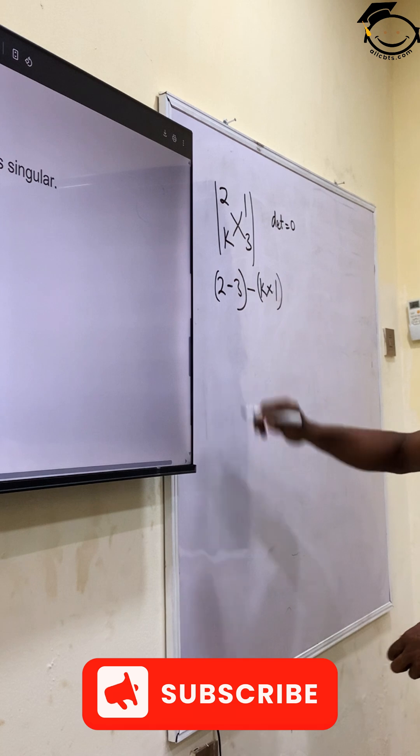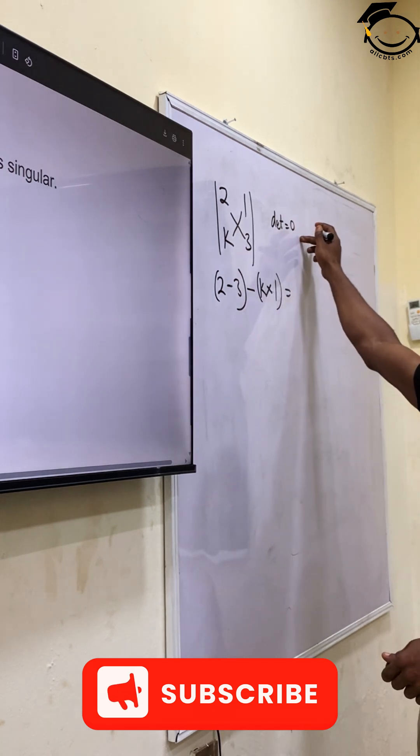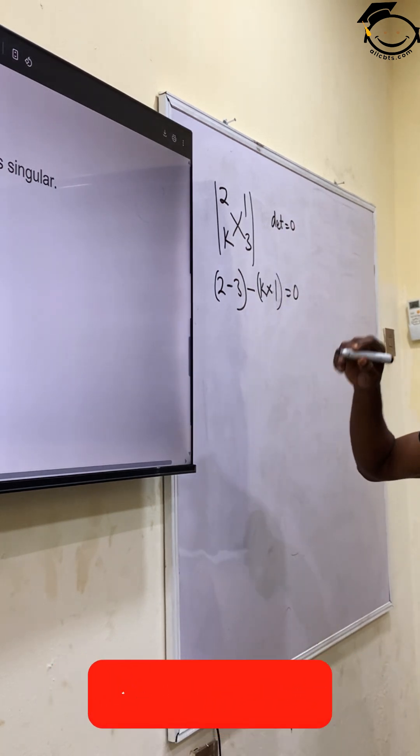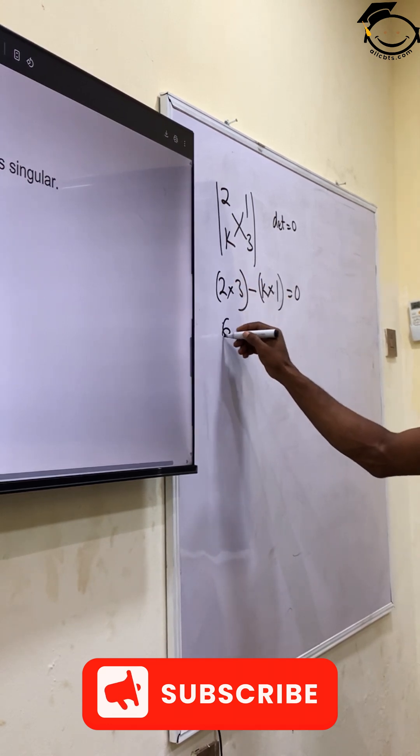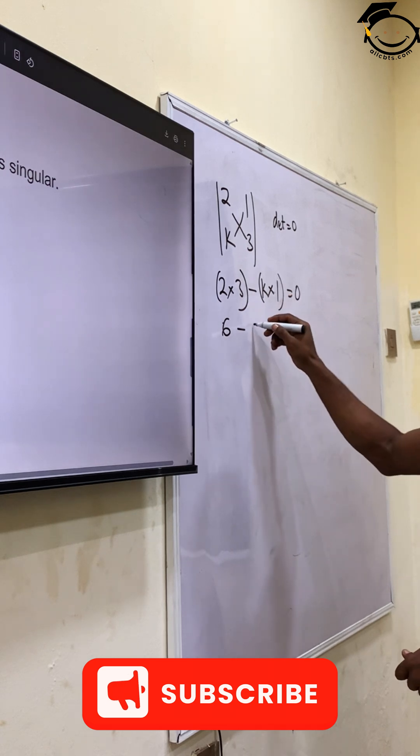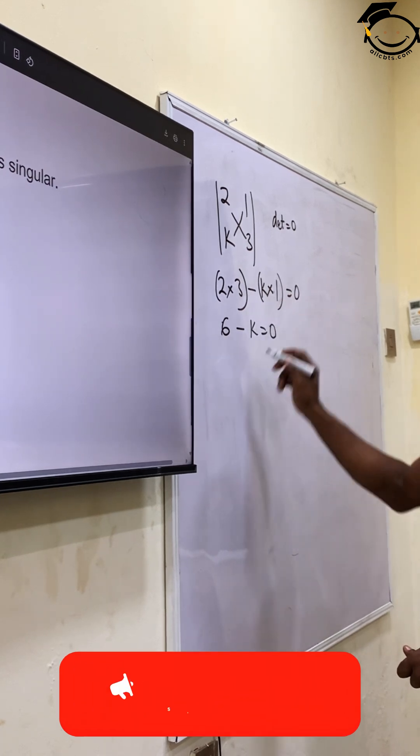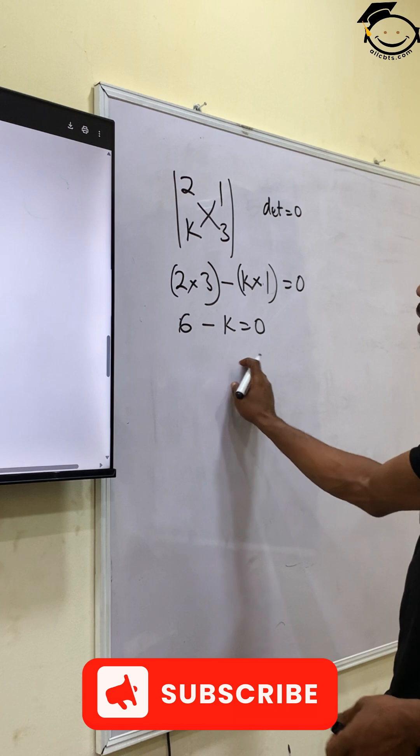So the determinant equals zero, which becomes: 2 times 3 equals 6 minus k times 1, giving us 6 minus k equals zero. Now solving for k by moving k